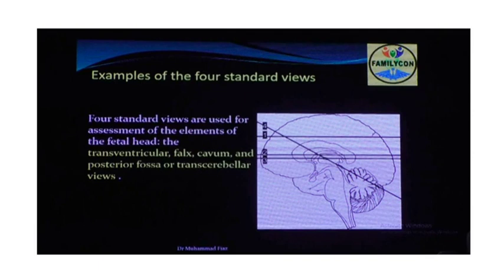Now, briefly about common fetal anomalies — this is not a detailed lecture. On ultrasound, I will compare images with cross-sectional imaging as well. For the brain on ultrasound, you need four planes: FOX, CAVM, transventricular, and transcerebellar. You must scan the brain in at least these four planes to assess all anomalies.